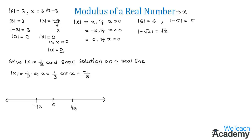It is now clear that if mod x equals a, where a is greater than zero, then x equals a (positive) or x equals minus a (negative). Likewise, we can solve other similar examples.